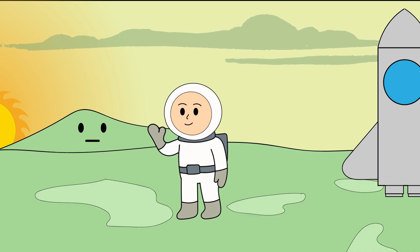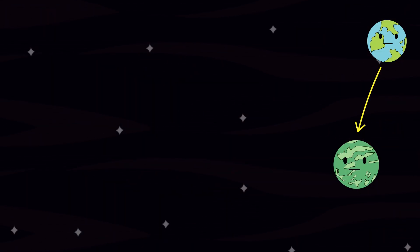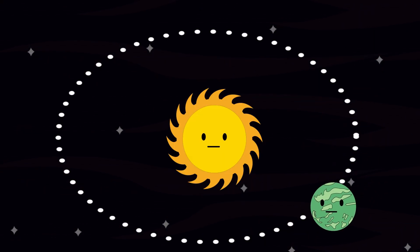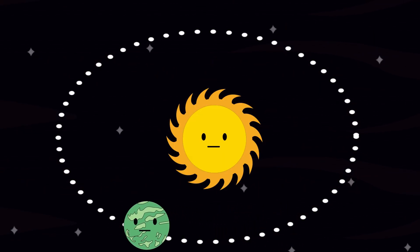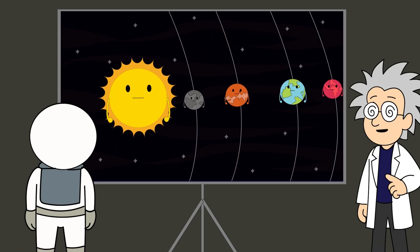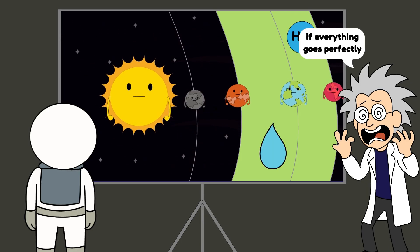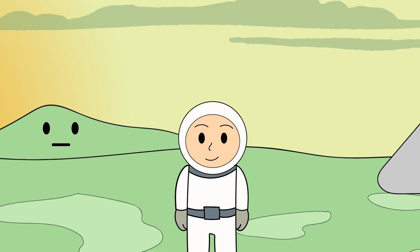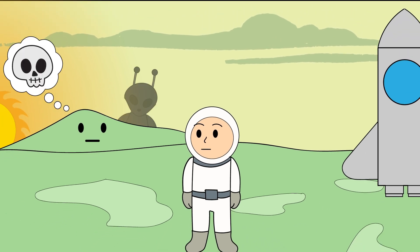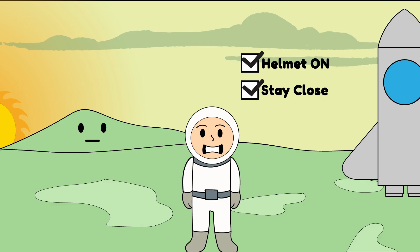Congratulations. You've landed on Kepler-22b, a planet 635 light-years from Earth, orbiting a star so similar to our sun that astronomers once whispered about it like it was a second chance. A world sitting neatly inside the habitable zone, where liquid water could exist if everything else lined up just right. This planet made headlines for one simple terrifying reason: you might survive here, and that thought should scare you more than anything else. So keep your helmet on, stay close, and don't touch anything. Let's take the tour.